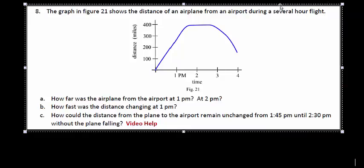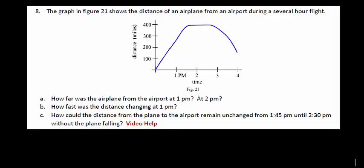So we have a graph of some function here and let's go ahead and take a look at this. For part A it says how far was the airplane from the airport at 1 p.m. and at 2 p.m.